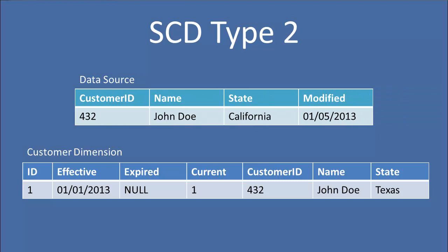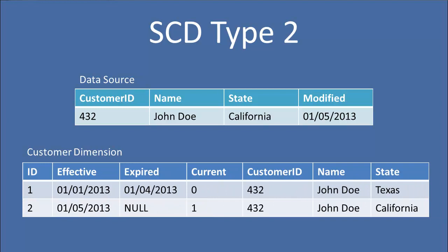So let's see what happens whenever our source system changes. Now the source system shows that John Doe is in California, and that value was modified on the 5th of January. In our dimension, we're going to expire that initial record — notice that we now have an expired date of January 4th, and we mark that record as not current with a zero. Then we add an additional record which has the effective date of January 5th and a current value of 1. The state now shows California for our current record, but we still have visibility that at some point in the past that attribute had a value of Texas, between the effective and expired dates of January 1st and January 4th.